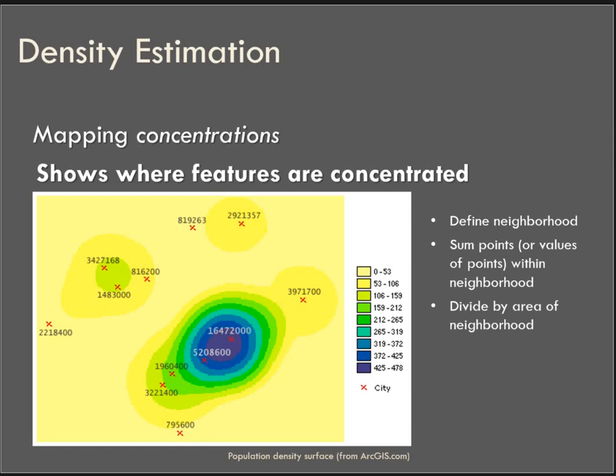Okay, so density analysis takes known quantities of some phenomenon and spreads it across the landscape based on the quantity that's measured at each location. Why would you want to do this? Density surfaces are good for showing where point or line features are concentrated. And then you can also weight it.